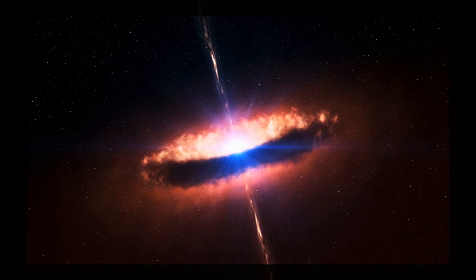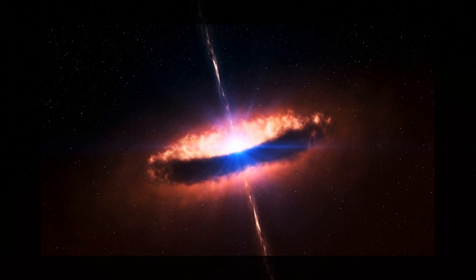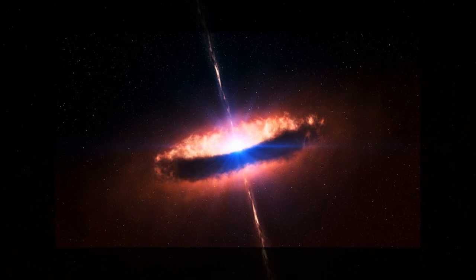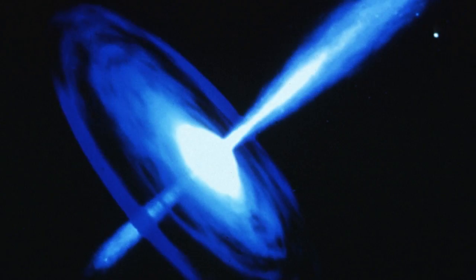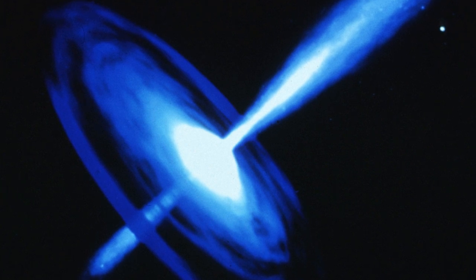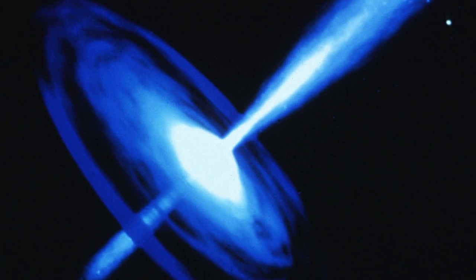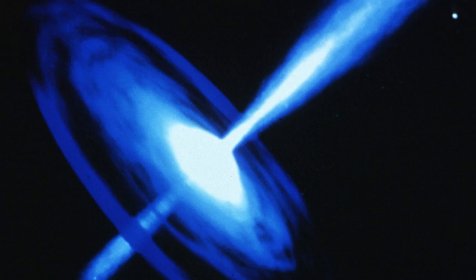Astronomers using NASA's Hubble Space Telescope have found that Markarian 231, the nearest galaxy to Earth that hosts a quasar, is powered by two central black holes furiously whirling about each other.